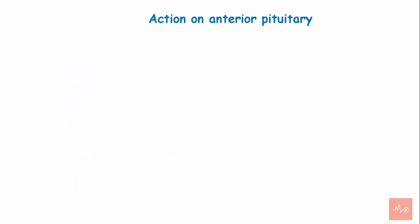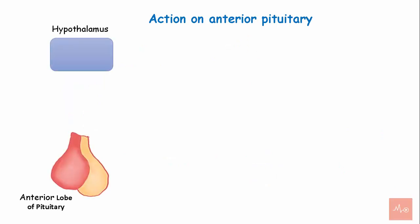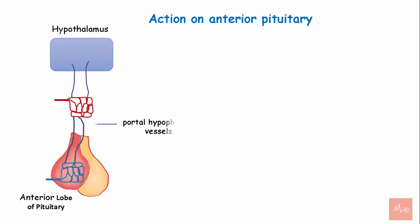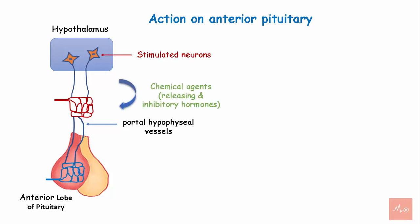Action on the anterior pituitary. The hypothalamus is connected to the anterior lobe of the pituitary via the portal-hypophysial vessels. Stimulation of neurons present in the hypothalamus leads to release of chemical agents — the releasing and inhibitory hormones — that travel through these vessels to the anterior lobe of the pituitary gland.